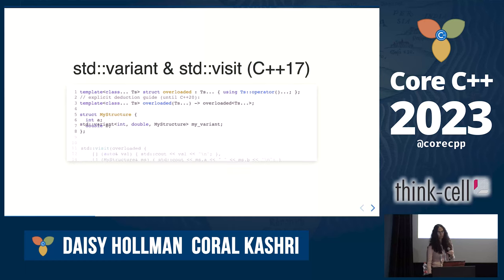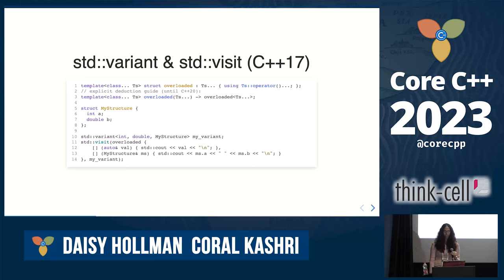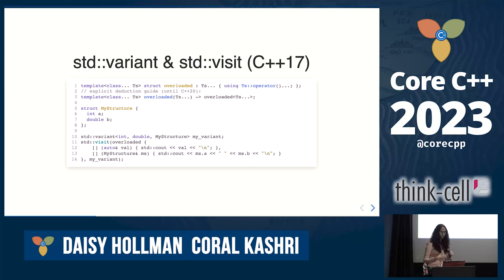Another thing that came with std::variant in C++17 is std::visit. Without digging into implementation details — there are plenty of talks on that — the general idea is to allow calling a dedicated function for each type currently held within the variant.